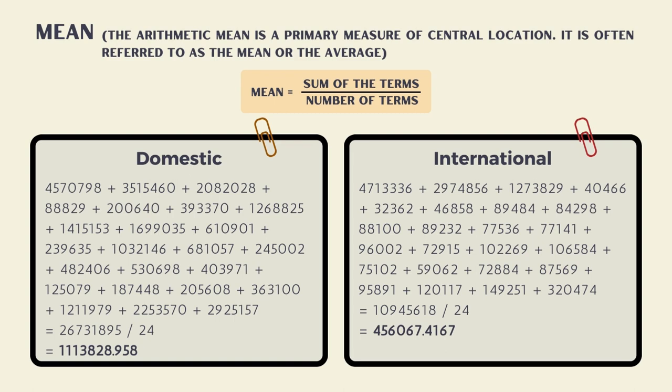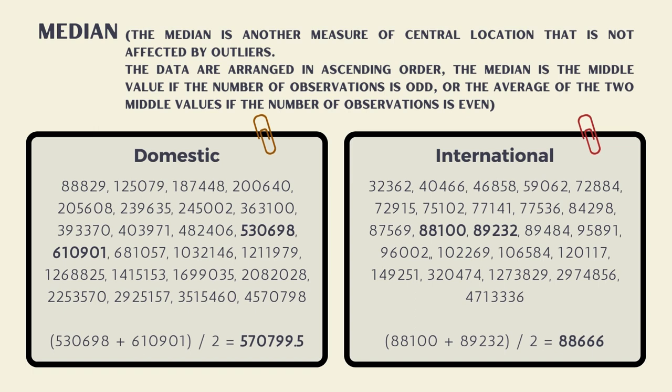The median is another measure of central location that is not affected by outliers. The data are arranged in ascending order. The median is the middle value if the number of observations is odd, or the average of the two middle values if the number of observations is even. For domestic, the two middle values are 530,698 and 610,901, divided by 2, so the median is 570,799.5.